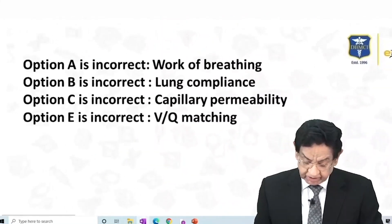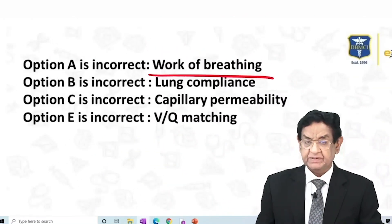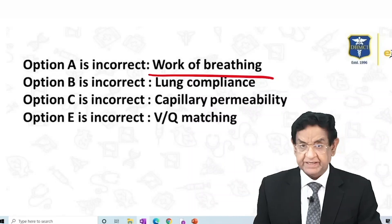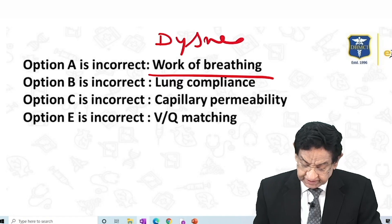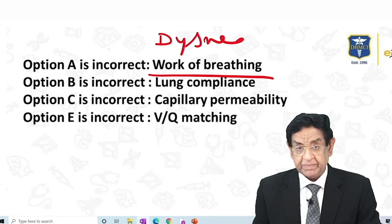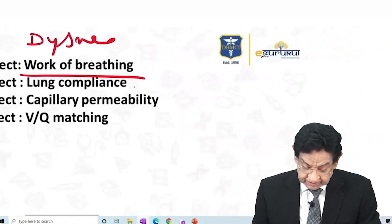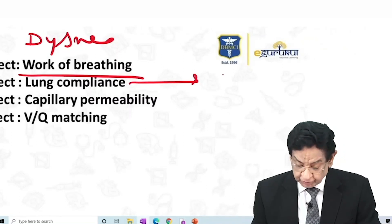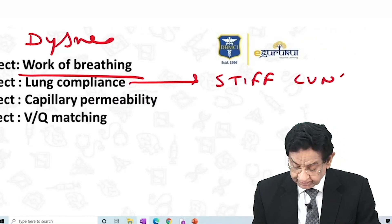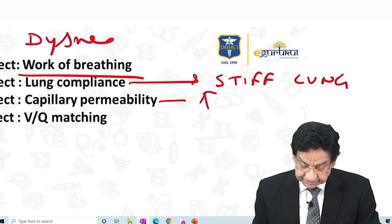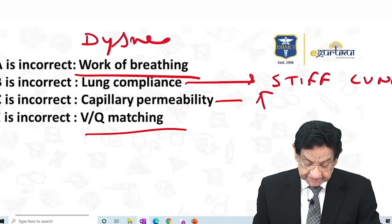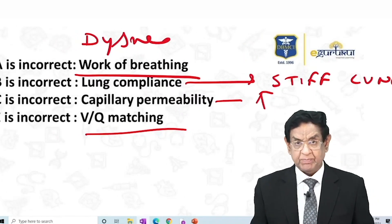In ARDS, the work of breathing increases. There is sudden onset of dyspnea, which is a feature. Lung compliance is reduced — that's why it is also known as stiff lung. Capillary permeability is increased, and VQ mismatching occurs. All these parameters are abnormal.